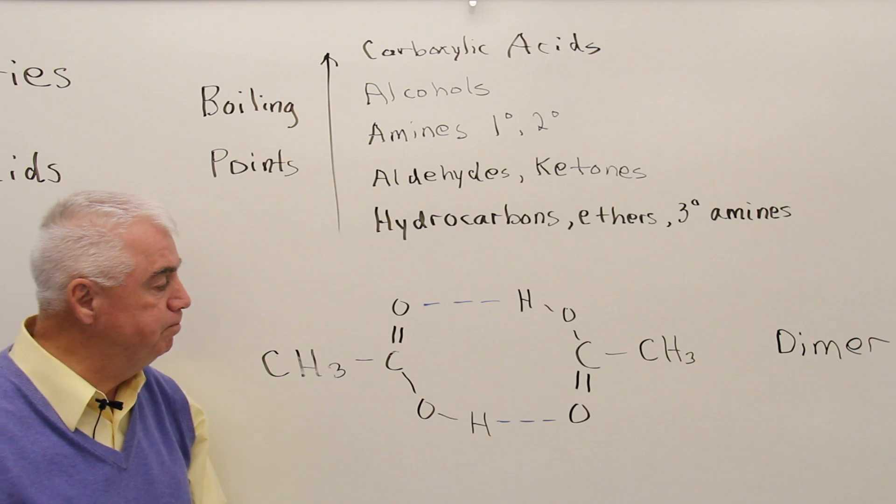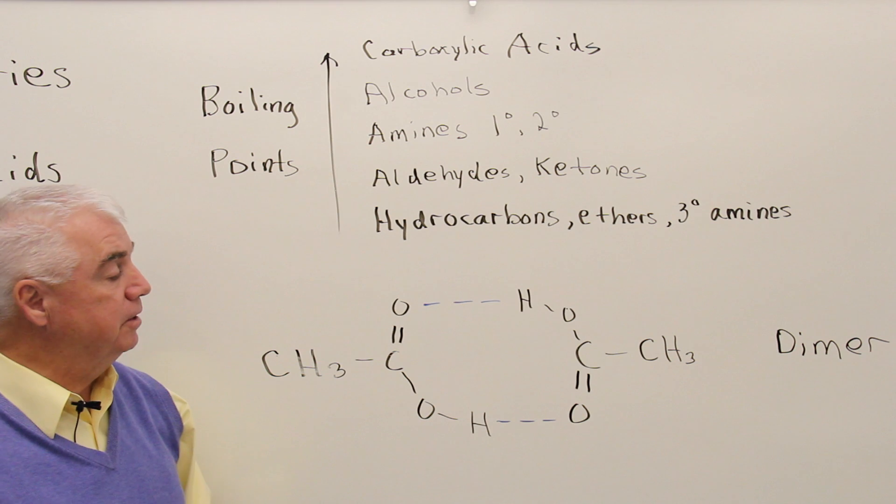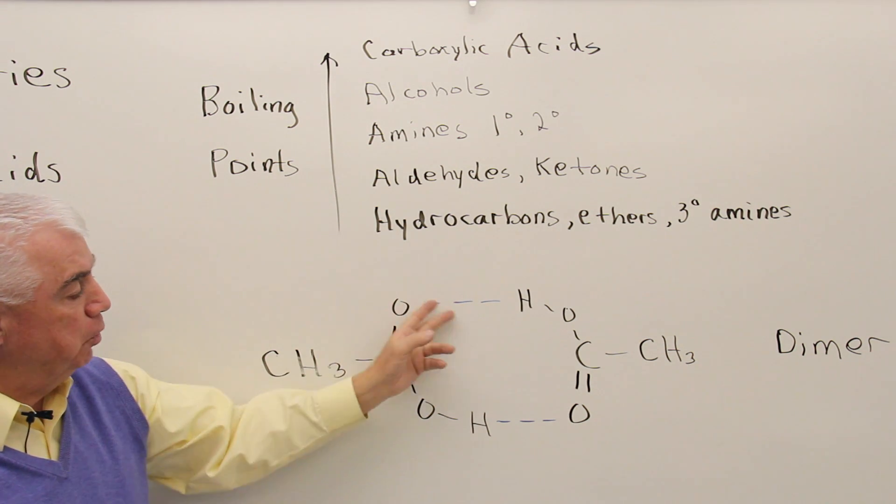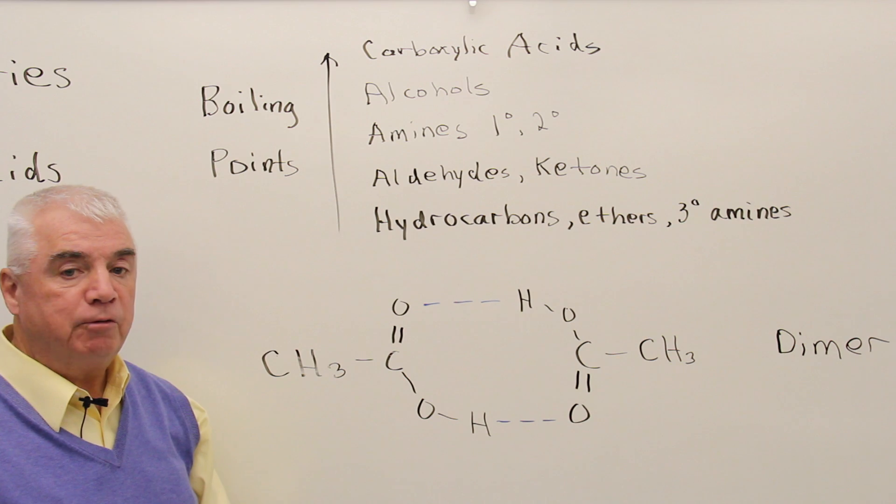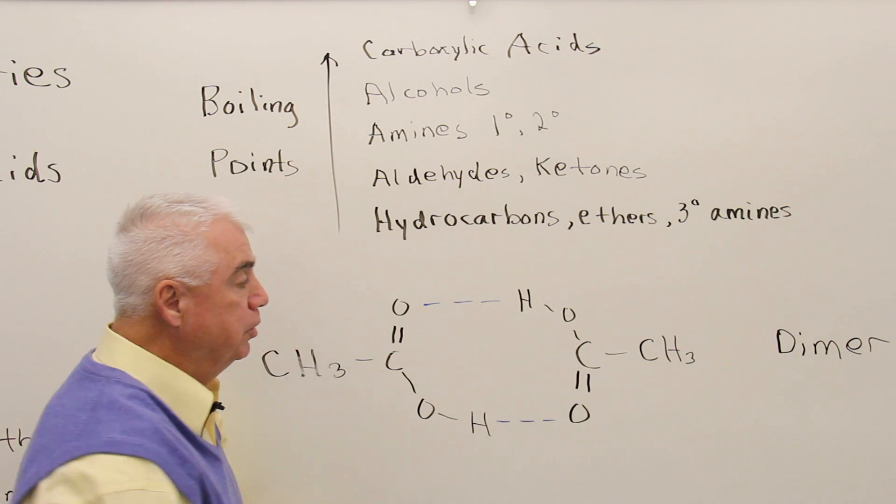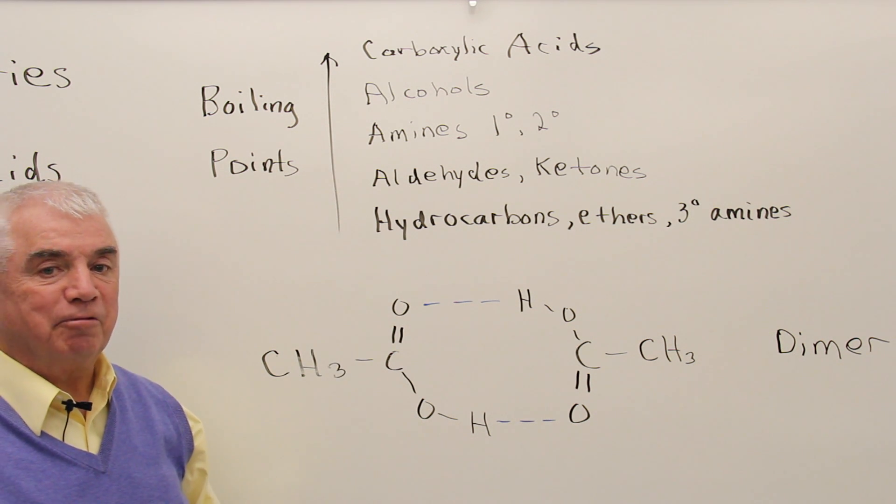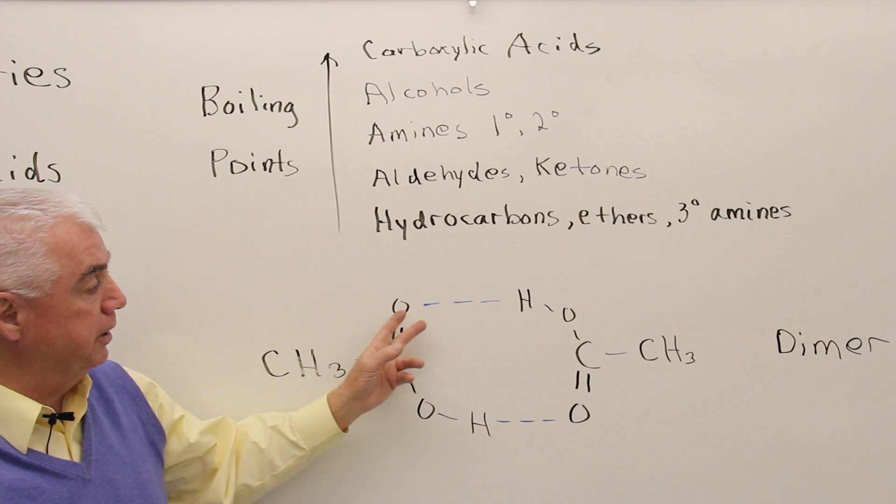Down here I've shown two molecules of acetic acid, or ethanoic acid, and the blue lines represent the hydrogen bonding. Here's a molecule on this side, a molecule over here, and we see that carboxylic acids are very efficient in forming hydrogen bonding.